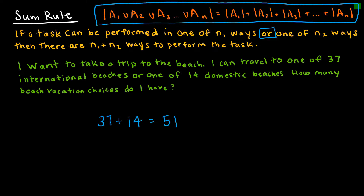I've written the sum rule out symbolically above. The lines on the side that look like absolute value represent cardinality, saying how many elements are in that union. So if I've got a choice of A1, or a choice of A2, or a choice of A3, etc., then all I have to do is add the number of each of those choices to find the total number of choices.